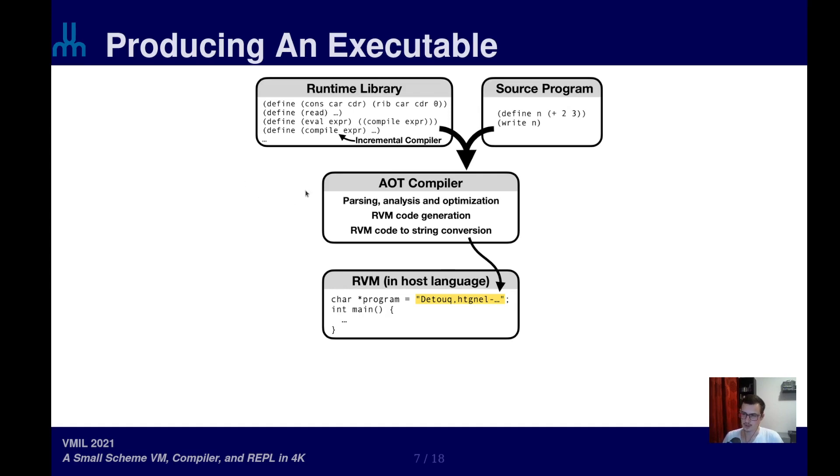However, the compiler does a bit more than just transform the source program. It also links the source program with the runtime library of your choice. So if you select more features, less features, they will be bundled with your program. And it does some optimizations that pertain to limiting the code size.